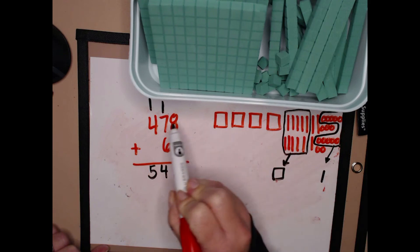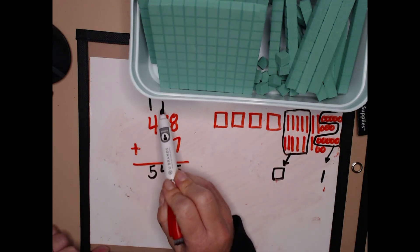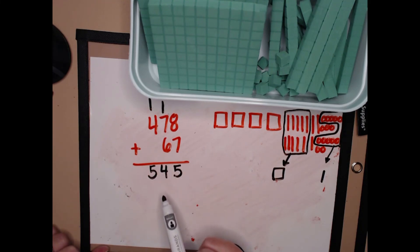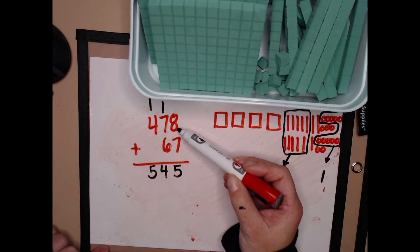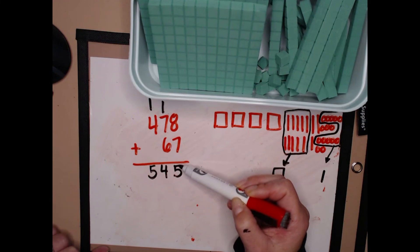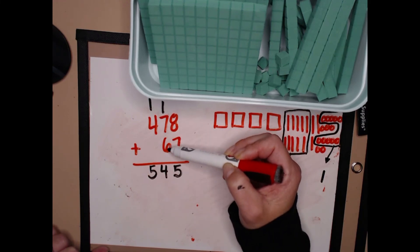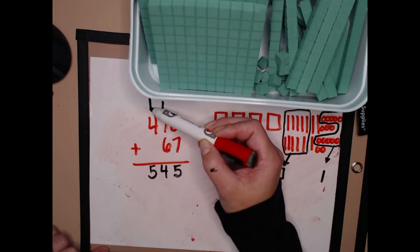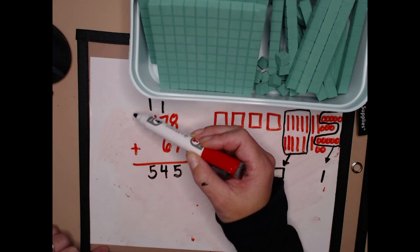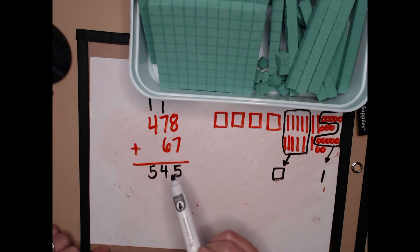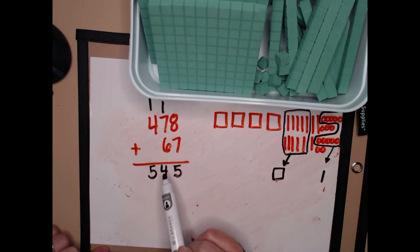The language here is what's most important. Many students will like this method of putting new groups above instead of new groups below or show all totals. But if students aren't able to use the correct vocabulary — that eight ones and seven ones is fifteen ones, a group of ten and five extra ones, or that seven tens plus six tens is thirteen tens plus another ten is fourteen tens carry the hundred — then they may not be ready for this method. Many of us know the steps, but we don't know the actual value of these numbers, so our language matters.